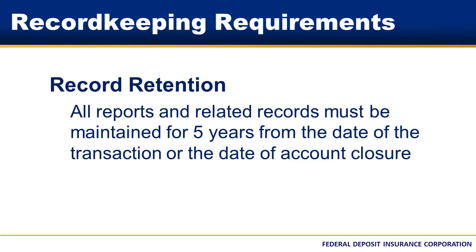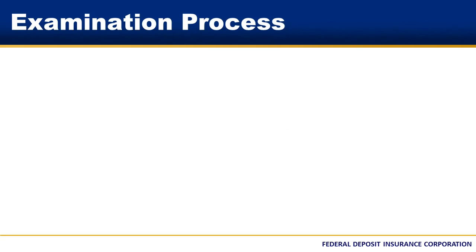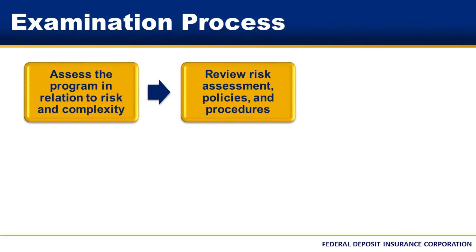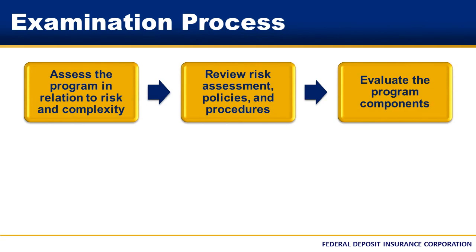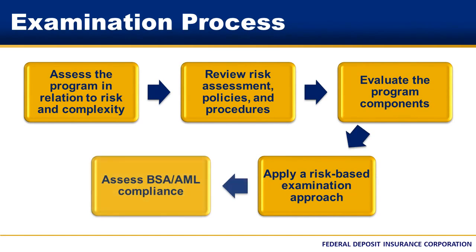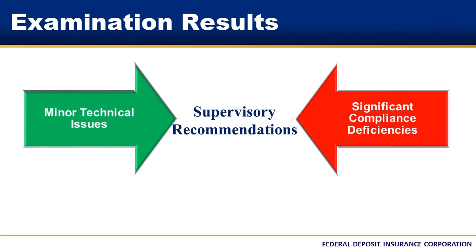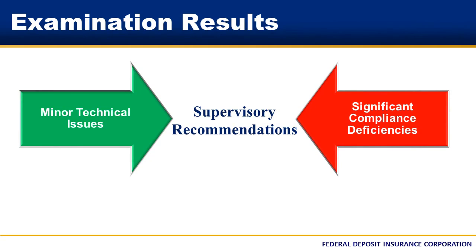Now let's change gears and talk about BSA examination procedures. During each safety and soundness examination, the FDIC evaluates the bank's compliance with the BSA and its implementing regulations. Examiners assess the appropriateness of the bank's program in relation to its risk profile. They begin this process with a review of the risk assessment and the bank's written policies, procedures, and processes. The BSA examination is focused on an evaluation of the BSA AML compliance program. The FDIC uses a risk-based approach to assess BSA AML compliance. Examination results requiring bank follow-up may range from minor technical issues to significant compliance deficiencies. Examination findings and recommendations will be discussed verbally throughout the entire examination process and be included in the final written report of examination.